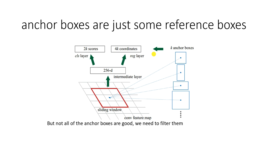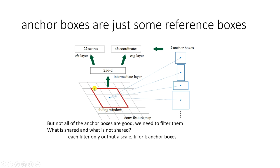We have so many anchor boxes but not all are good — we only want anchor boxes with large overlap with the ground truth, and we apply estimation only to those. So there is a filtering step. Also, for each position, if we have k anchor boxes of different scales and aspect ratios, we must have k different filters — each filter is responsible for one anchor box. Filters between different anchor aspect ratios or scales are not shared.